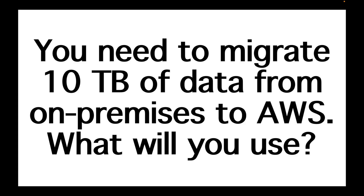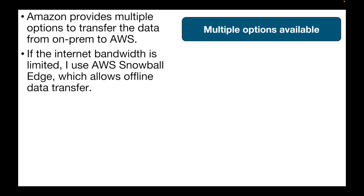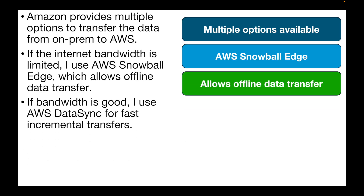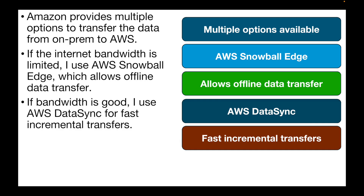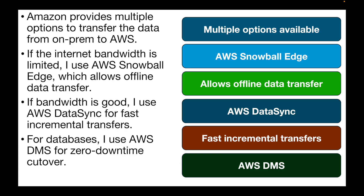The next question is: you need to migrate 10 TB of data from on-premises to AWS. What will you use? There are multiple options. If internet bandwidth is limited, use AWS Snowball Edge for offline data transfer. If bandwidth is good, use AWS DataSync for faster incremental transfers. For databases, use AWS DMS (Database Migration Service), which provides zero-downtime cutover when migrating from one database to another.